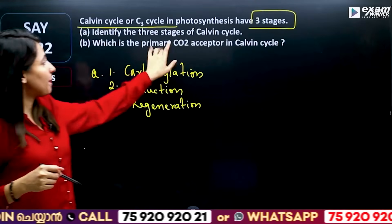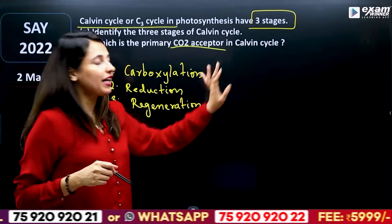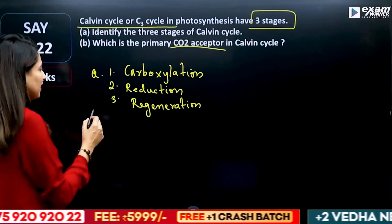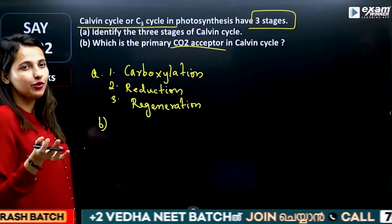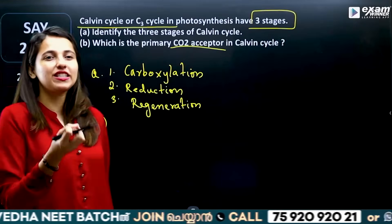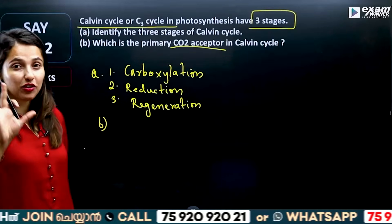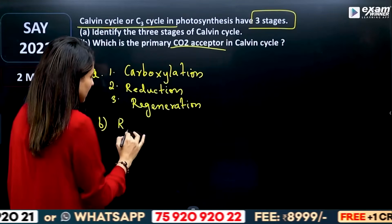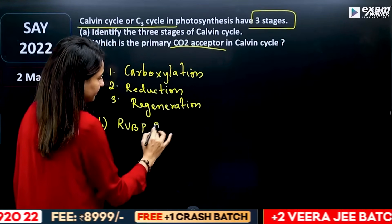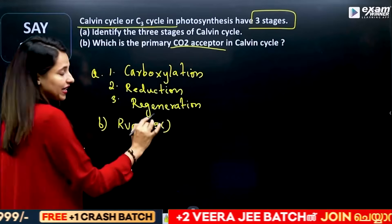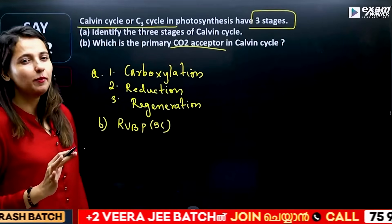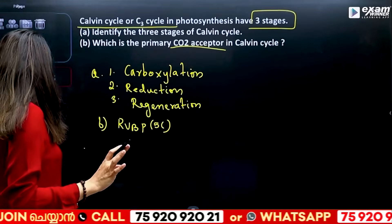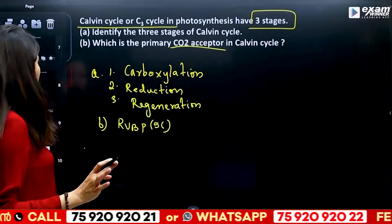Which is the primary carbon dioxide acceptor in the Calvin cycle? For the Calvin cycle, the carbon dioxide acceptor is a 5-carbon compound, that is RuBP. This cycle is very important to learn.